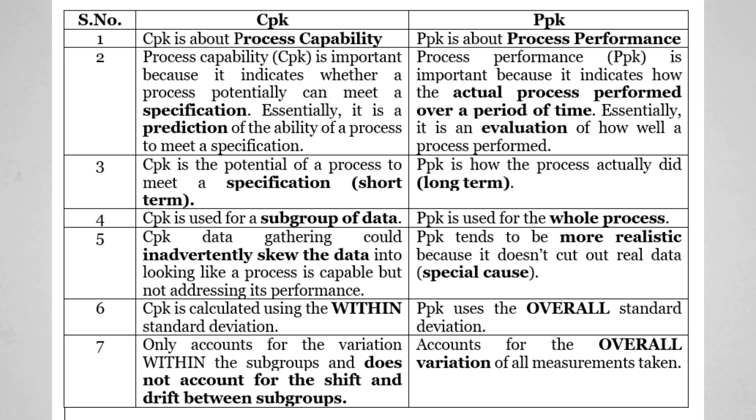CPK generally uses a subgroup of data while PPK uses the whole process. When gathering CPK data, we can skew the data because we are not considering everything, like special causes. But PPK is more realistic because it does not cut the real data — it includes all kinds of causes, special cause as well as common cause. CPK is calculated using within-subgroup standard deviation, while PPK uses the overall standard deviation. CPK does not account for shifts and drift between subgroups, while PPK accounts for overall variation in the measurement system.